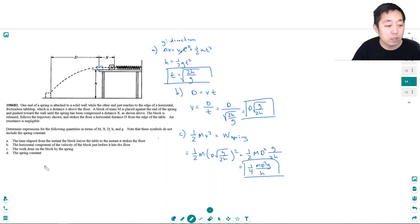All right, part d: now we have to figure out the spring constant. Well, if the work it did was this, then the work of the spring is how much energy it had in the spring initially, which is one half k delta x squared. Delta x is capital X, so I have k X squared.